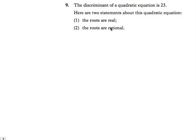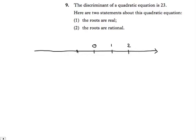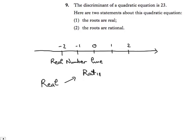First of all we need to discuss what 'real' and 'rational' mean. So let's look at a number line — the arrow shows increasing numbers. There's 0, 1, 2 and so on; minus 1, minus 2 and so on. You have to imagine that every single point on this number line represents a number. That's all the real numbers, so this number line could be called the real number line.